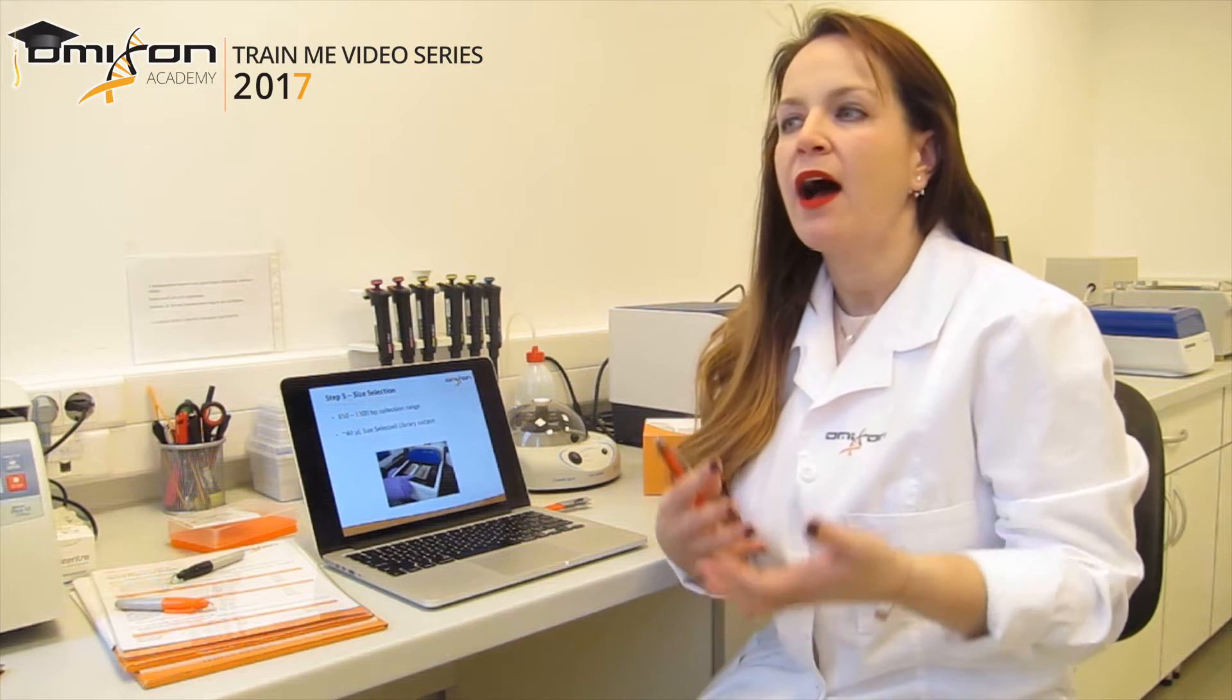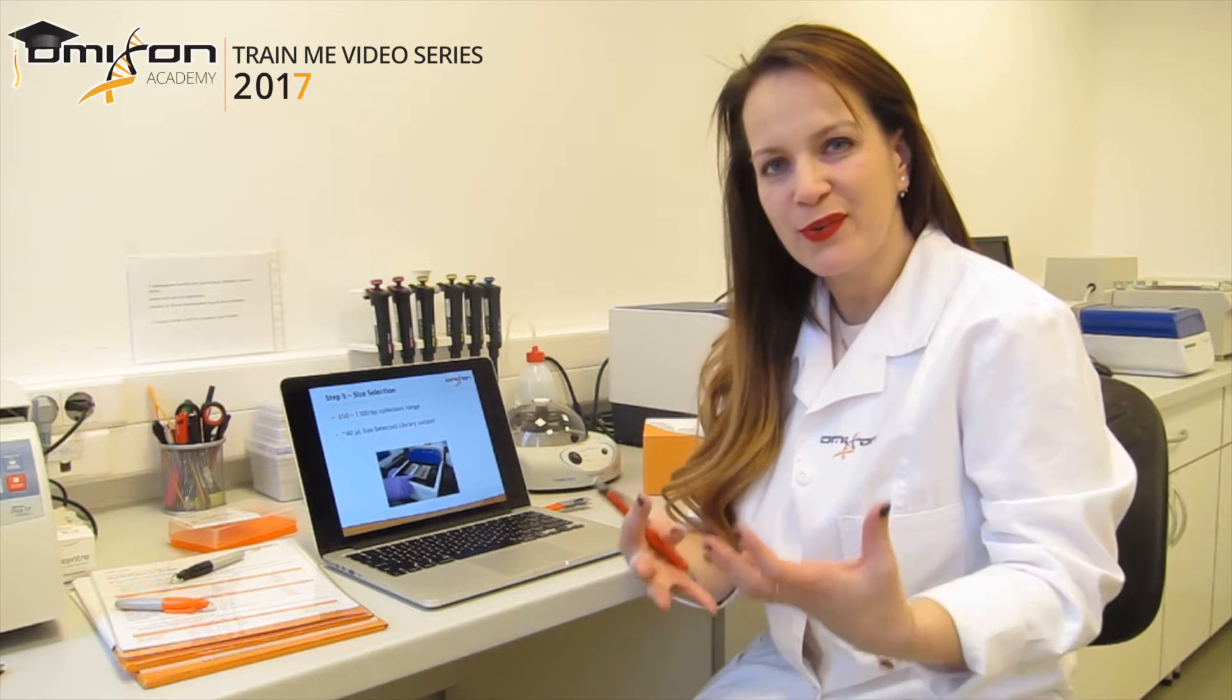Let me explain to you how this machine works. As you probably already know, we use an automated method to do size selection. The machine is called PIPing Prep and it is made by Sage Science, a company in the United States. It's actually a very simple method and sometimes I wonder why I didn't think of it beforehand. It's a very basic principle.